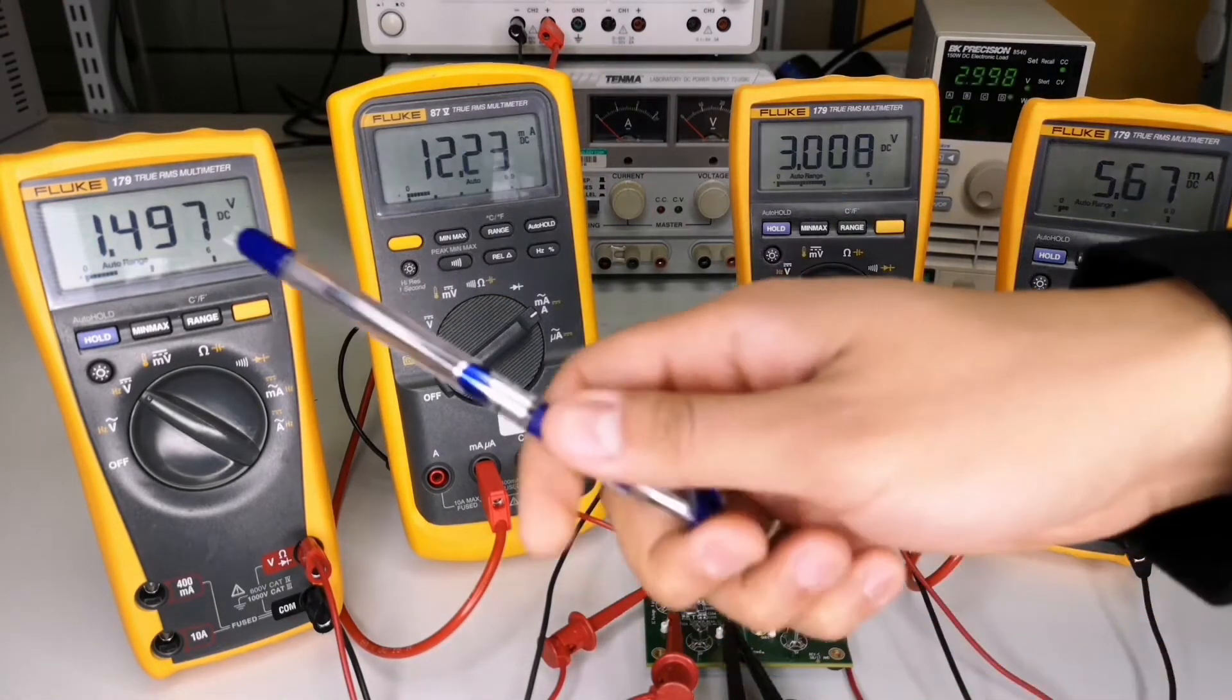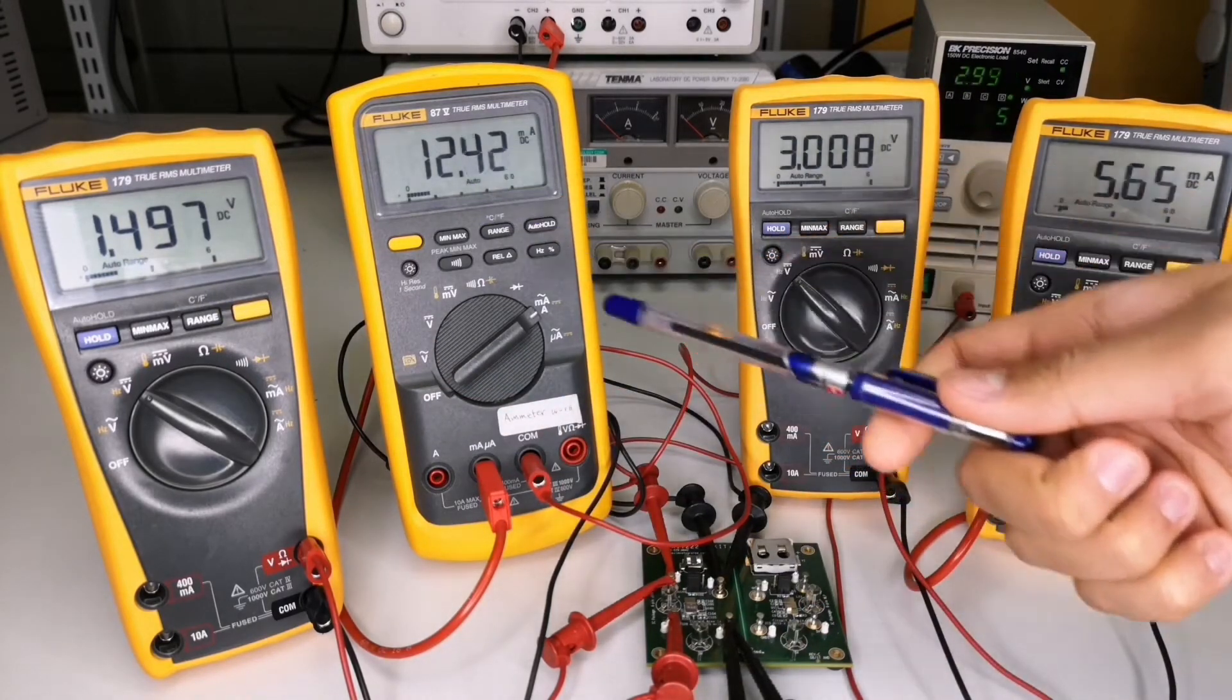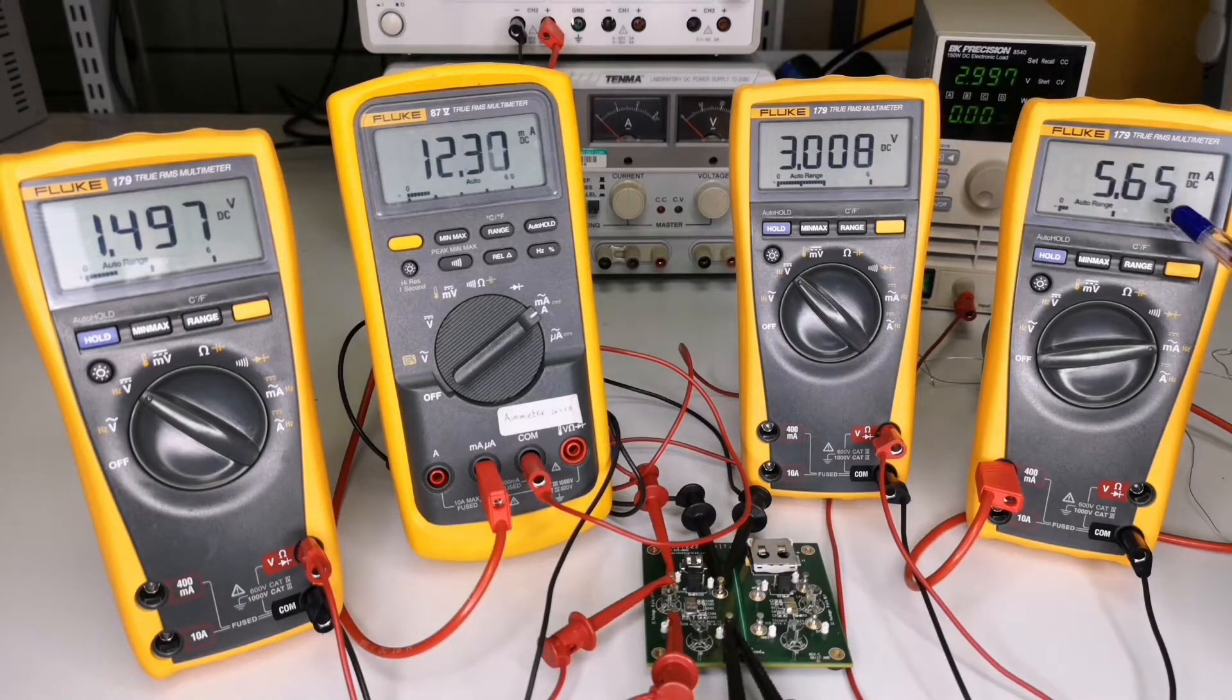We can see the input voltage is 1.5 volts and the part is drawing a current of approximately 12 milli amperes, and the output voltage is a steady 3 volts for an output current of roughly 6 milli amperes.